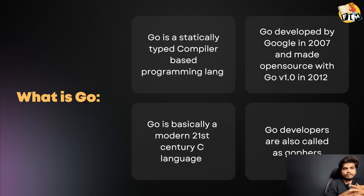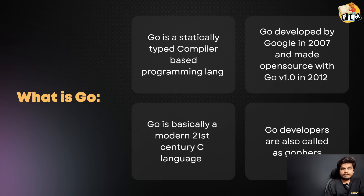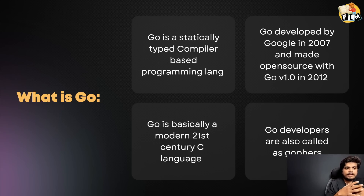Go is basically a statically typed, compiler-based programming language. Go is a statically typed language. That means, in Go language, the type of a variable is known at compile time.